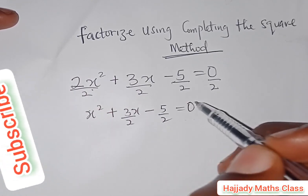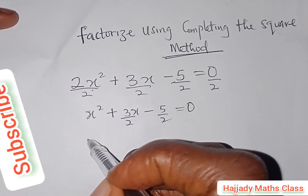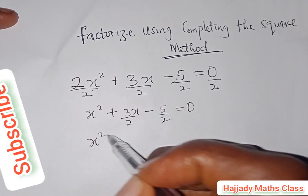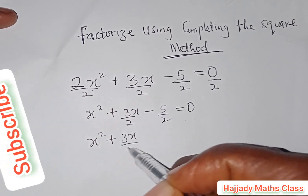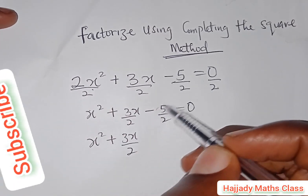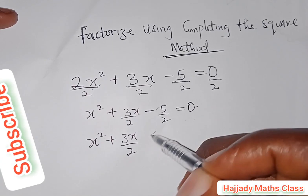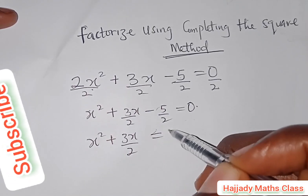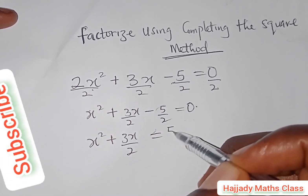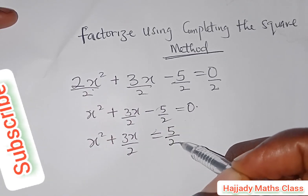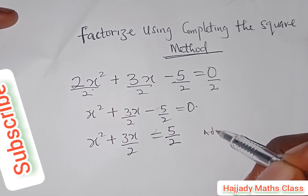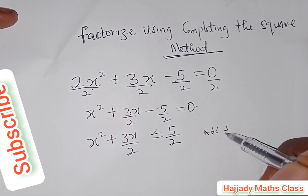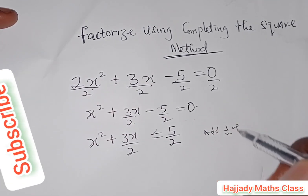With this we have x² + 3x/2. Moving the constant to the right-hand side, we have 5/2 on the right. The next step is to add half of the coefficient of x to both sides.